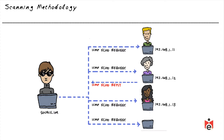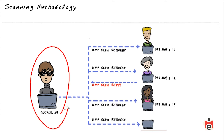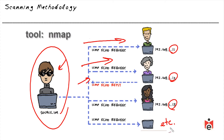If we get a response we know there's a device at that IP address; if not, we may or may not have a device there. Instead of manually pinging every IP in a subnet, an attacker will likely use automated tools. There are lots of tools that can do what's called a ping sweep, sending a ping request to every IP address. One such tool is nmap.